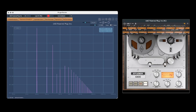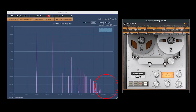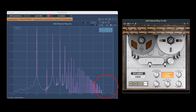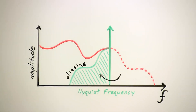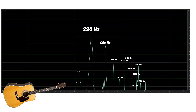When you distort a signal in the digital domain, the high-frequency harmonics that are excited can very easily reach the Nyquist limit. And once they do, they'll fold back into the audio spectrum as aliasing. Unfortunately, these artifacts won't necessarily stick to a musical harmonic series that's pleasing to our ears.